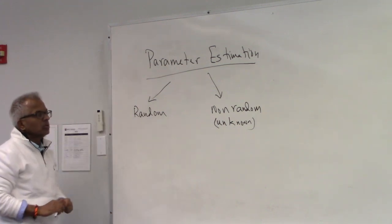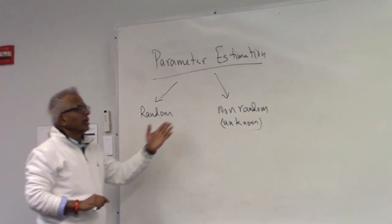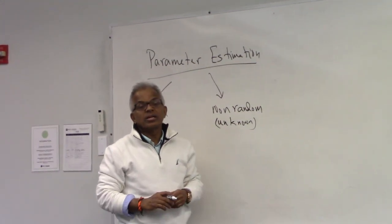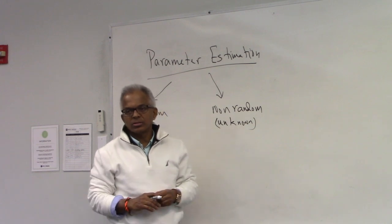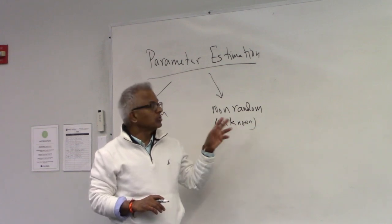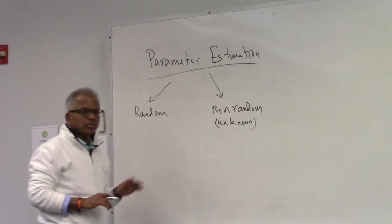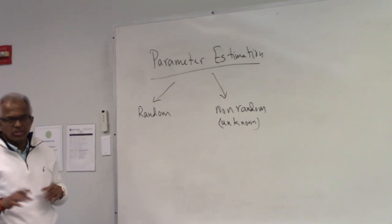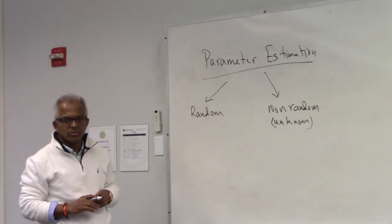There are two cases. Non-random means there is an unknown, but nothing random about it — it is simply unknown. So the constant is unknown. We will go to parameter estimation first; later we can have waveform estimation, which we will do towards the end of this course.